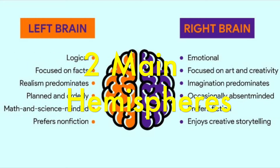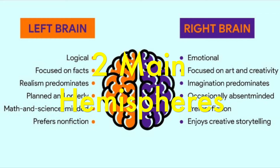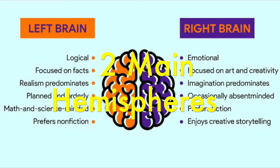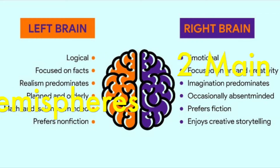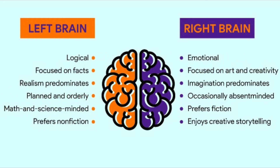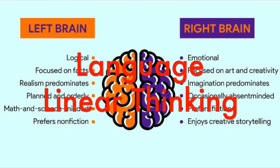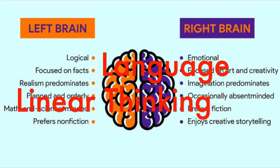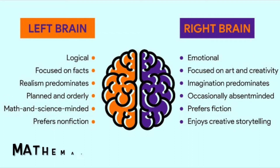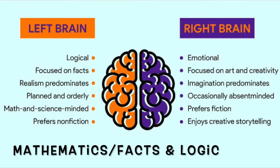There are two main hemispheres, each with their individual functions. Think about the left brain as what you use in school — it handles functions like language, linear thinking, mathematics, facts, and logic.